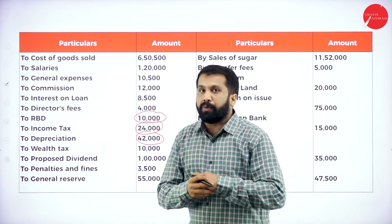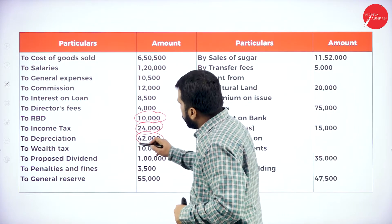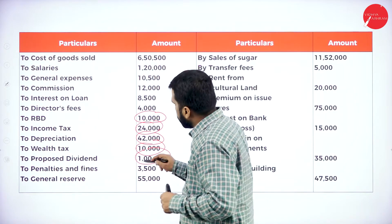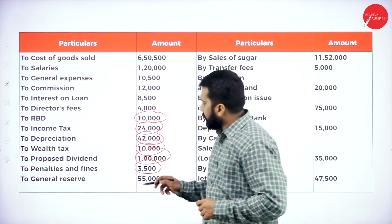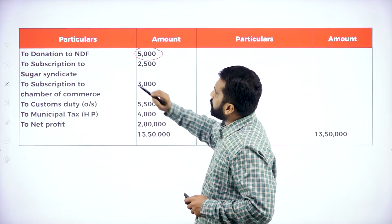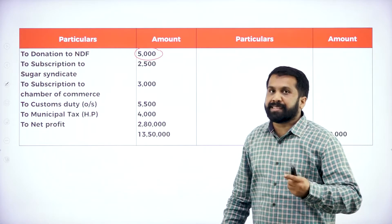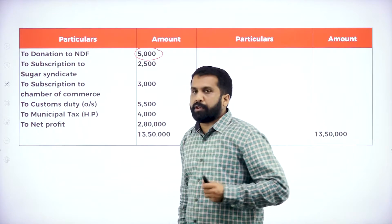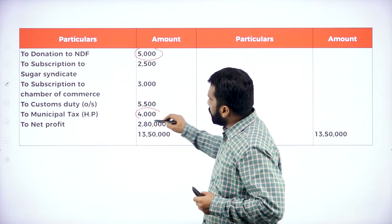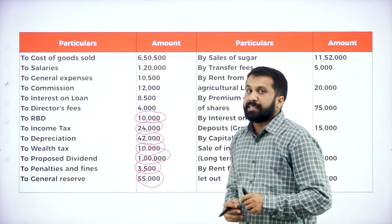After depreciation, we have wealth tax — 10,000. Wealth tax, take. Proposed dividend, take. Penalty and fines, you are supposed to take. General reserve — take, because we have the word reserve. Donation to NDF, take. Subscription to sugar industry — part of your business, because you are running a sugar industry. Whatever subscription paid is business-related. Chamber of commerce subscription — part of your business. Municipal tax — whatever you paid, you are supposed to take. These are the things we are supposed to consider as disallowed items.